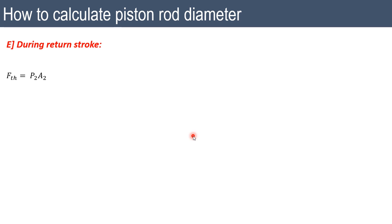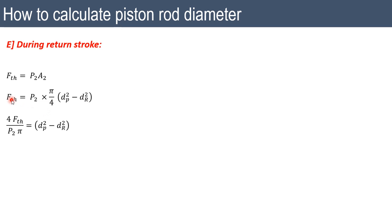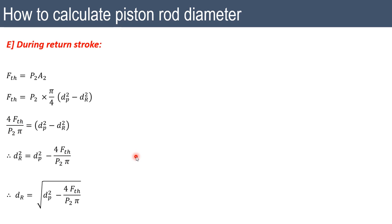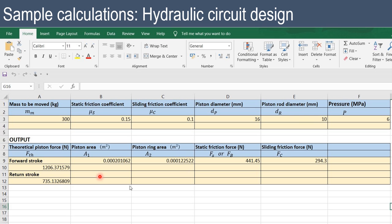If the theoretical force during the return stroke is known, we can find the piston rod diameter. From F_theoretical = p2·(π/4)·(dp² − dr²), rearranging gives: dr = √(dp² − (4·F_theoretical) / (p2·π)). This allows calculation of the piston rod diameter from the return stroke operating conditions.